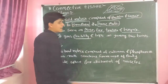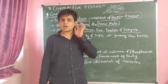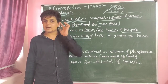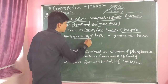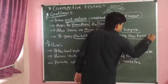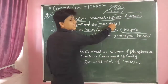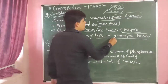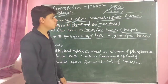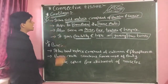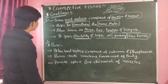Cartilage gives flexibility — we can move it in any direction, as I can show you here. It gives flexibility and helps in joining two bones. Cartilage is present at the ends of bones, and because of this it helps to join two bones. Here our third type of connective tissue, cartilage, is finished.